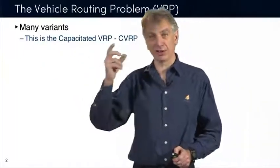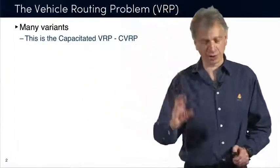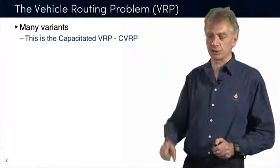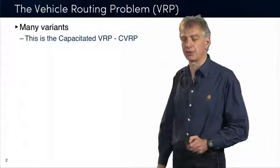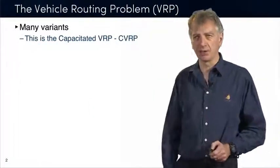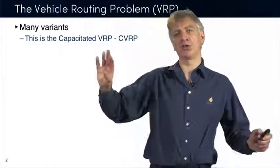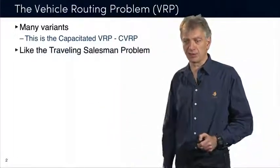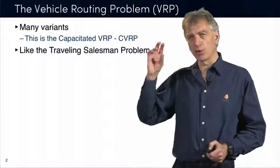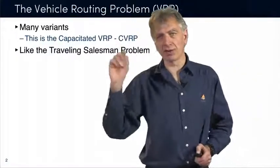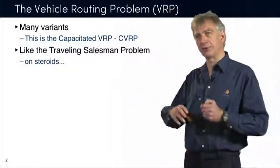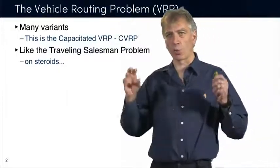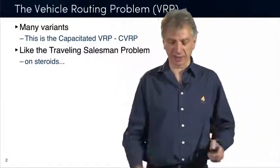This is also very difficult in general. The assignment is going to be one particular type, which is called the capacitated VRP. This is by far not the most difficult VRP problem, but it's still very, very challenging. You have to think about it as like the TSP except we have many vehicles, and we have these additional constraints on what these vehicles can do.